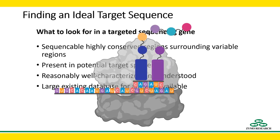While this describes a few genes, by far the most commonly used is from the ribosome, and specifically the smaller ribosomal subunit, which is the 16S in bacteria, and the 18S in eukaryotes and archaea.